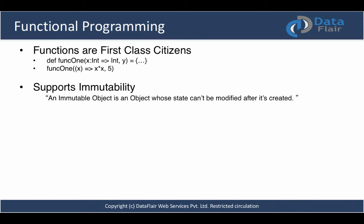An immutable object is an object whose state cannot be modified after it's created. Another important concept of this pattern of programming is referential transparency. Referential transparency means that functions you write should accept some arguments and return results after some computation or logic, without affecting other parts of your program — such as the state of a variable.